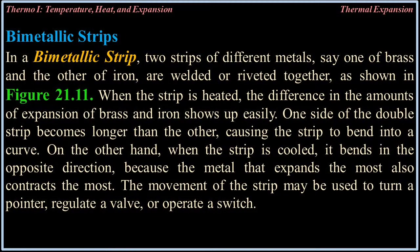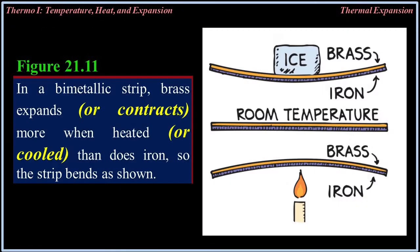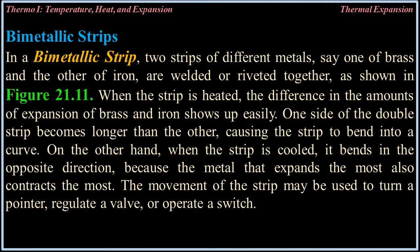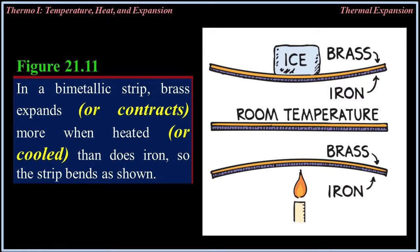Bimetallic strips: In a bimetallic strip, two strips of different metals — say, one of brass and the other of iron — are welded or riveted together. When the strip is heated, the difference in amounts of expansion of brass and iron shows up easily. One side of the double strip becomes longer than the other, causing the strip to bend into a curve. When the strip is cooled, it bends in the opposite direction because the metal that expands the most also contracts the most. The movement of the strip may be used to turn a pointer, regulate a valve, or operate a switch. Brass expands or contracts more when heated or cooled than does iron.